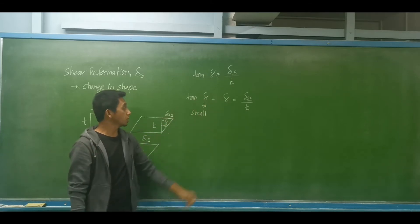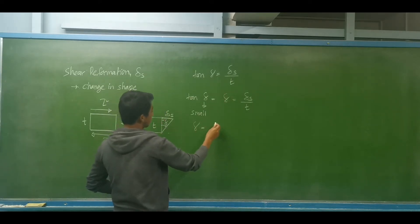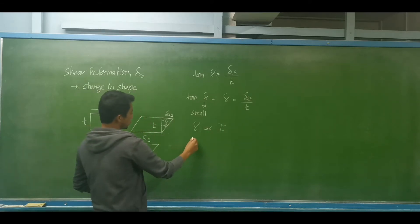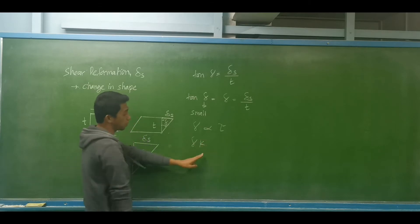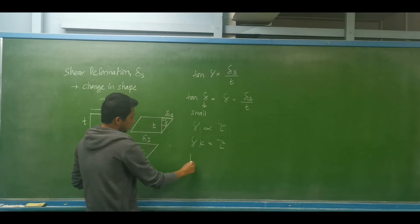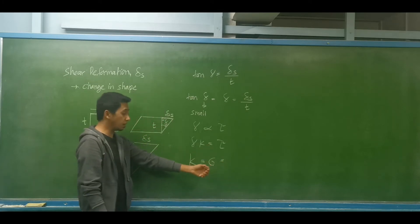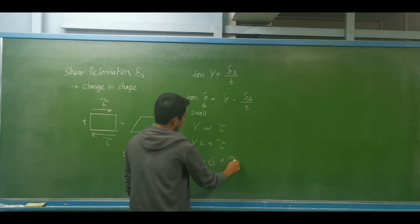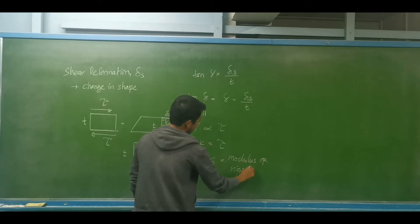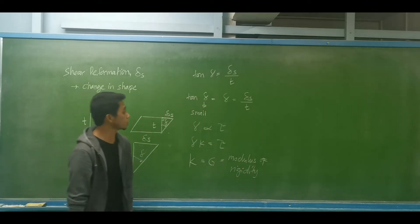Gamma is directly proportional to the shearing stress. Introducing a proportionality constant, we get gamma equal to shearing stress divided by that constant, where the proportionality constant is basically equal to G, the modulus of rigidity.